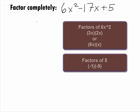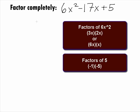Factors of 6x squared could be 3x and 2x or 6x and x. Factors of 5 could be a negative 1 and negative 5.